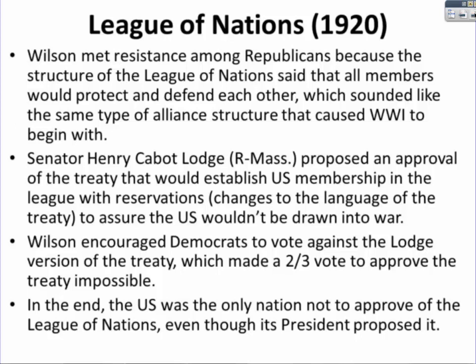So Wilson, a Democrat, saw a ton of resistance from Republicans back at home. Senator Henry Cabot Lodge, a Republican from Massachusetts, proposed an approval of the Treaty that would establish U.S. membership in the League with reservations — it would change the language of the Treaty to assure that the U.S. would not be drawn into a war. Wilson encouraged Democrats to vote against the Lodge version of the Treaty, which made a two-thirds vote to approve the Treaty impossible. In the end, the United States is the only nation not to approve of the League of Nations.